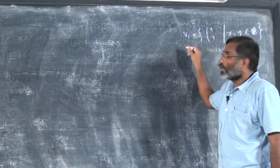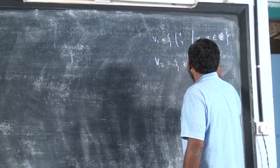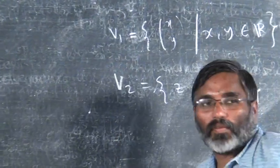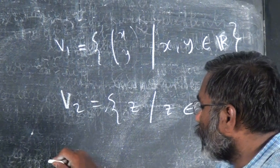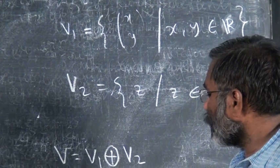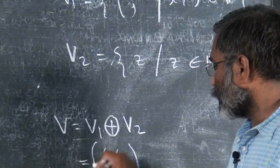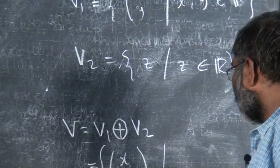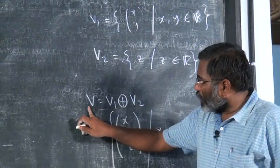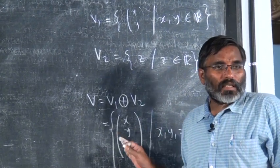This is a vector space. Suppose I have another vector space z such that z is in R. So this is a two-dimensional vector space and this is a one-dimensional vector space. V equals V1 plus V2 means this equals {x, y, z} such that x, y, z are in R, so that the dimension of V equals the sum of the dimensions of V1 and V2. This is the direct sum.